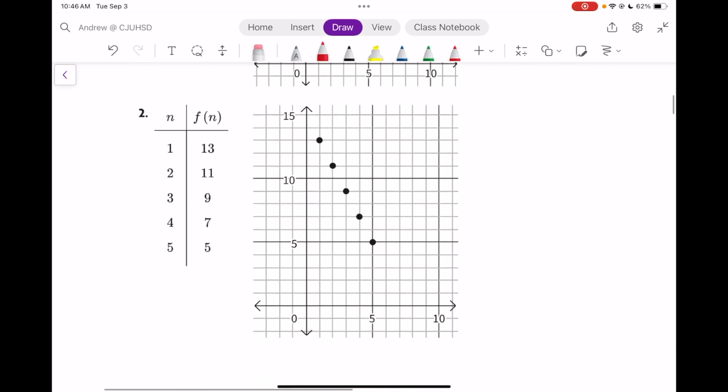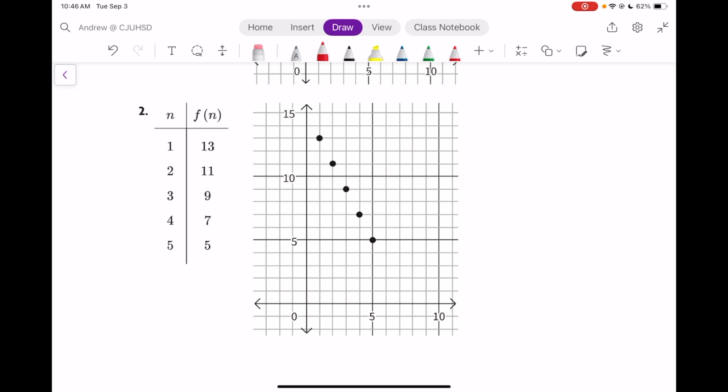In our next table and graph, we're going down, down 2, and right 1. So the slope is negative 2, and you can see it in the table. We're going from 13 down to 11, down 2, and plus 1. There's the slope.